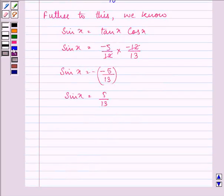Now we can find the value of cosec x as 13/5.